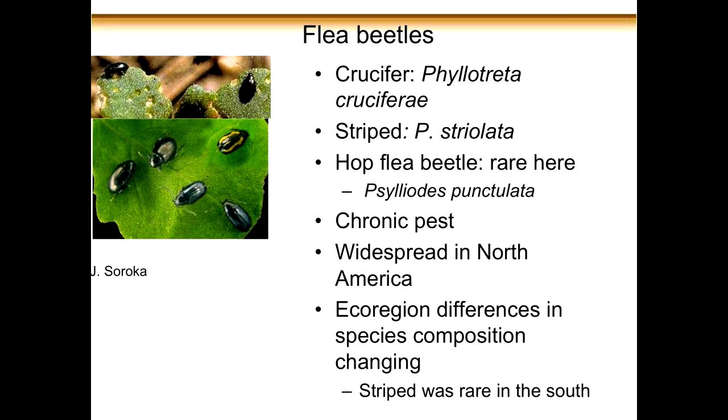Phytotreta striolata, the striped flea beetle, is one we are beginning to see more of. It's more common in humid areas and is a very interesting species. There is another species called the hop flea beetle, which is not all that common but seems to be out there and is earlier in its phenology.